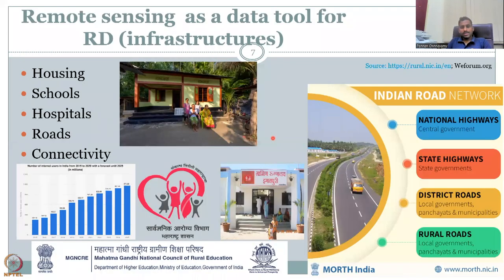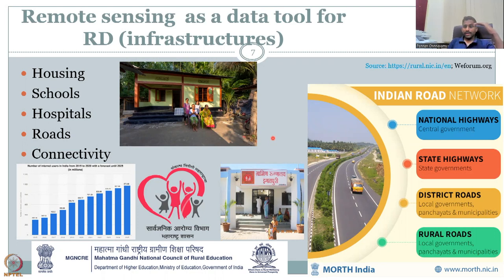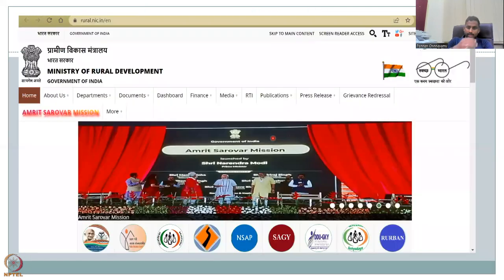We also looked at where remote sensing can be used as a data tool. Along with water and food security, we looked at rural development infrastructure such as housing, schools, hospitals, roads, and connectivity. Roads differ from connectivity here — connectivity mostly refers to internet and mobile network connectivity. There are multiple government schemes working on addressing all of this.